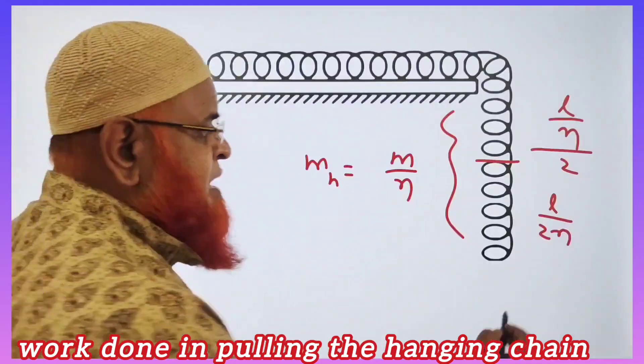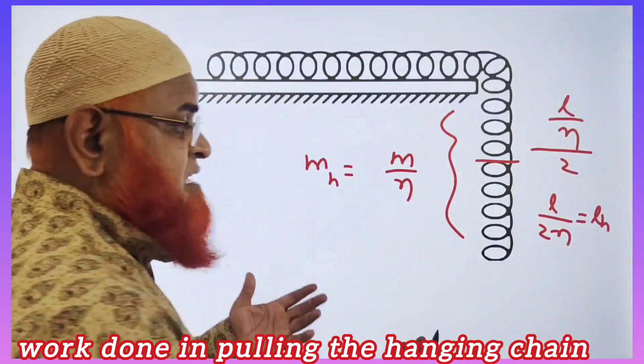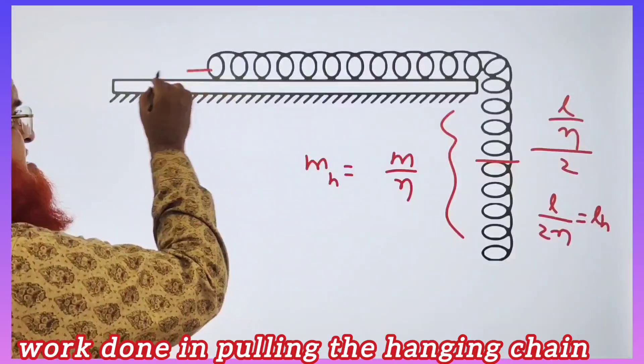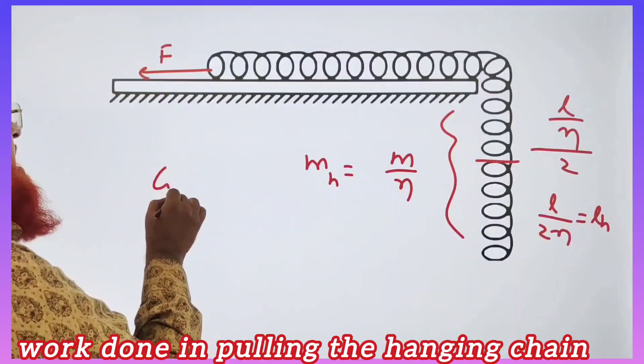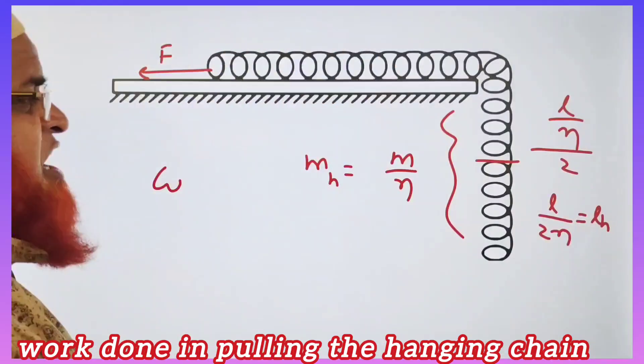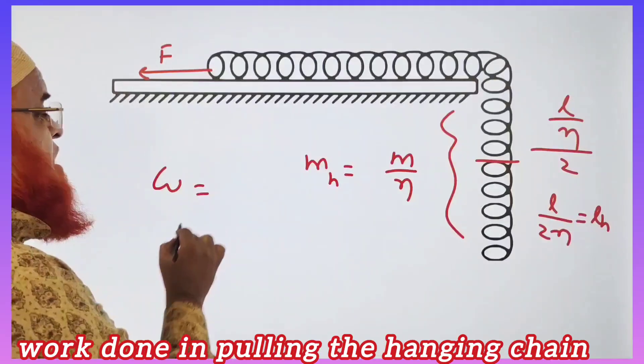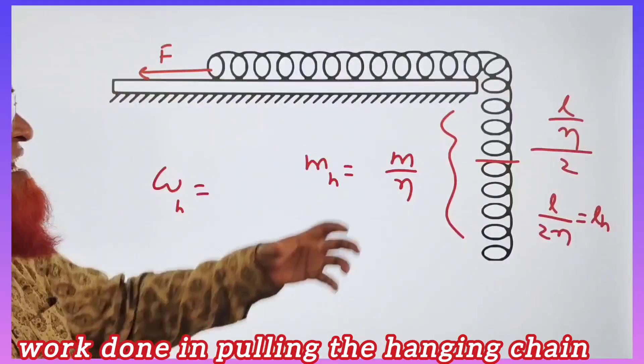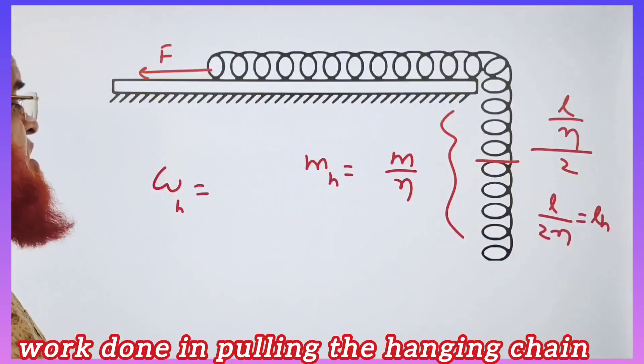The mass of the hanging chain is M by N and length of the hanging chain is L by 2N. So work done in pulling the chain totally on the table is the work done on the hanging chain to pull it completely on the table.